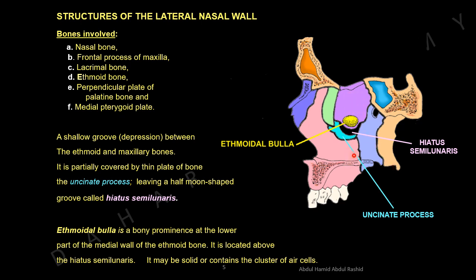Between the ethmoid bone and the maxillary bone there is a shallow gap, which is partially closed by a thin plate of bone called the uncinate process, leaving a shallow semilunar-shaped gap called the hiatus semilunaris. On the medial surface of the ethmoid bone, at the lower part, there is a bony prominence called the ethmoidal bulla, which is above the hiatus semilunaris. The ethmoidal bulla may be solid or may contain a cluster of air cells.